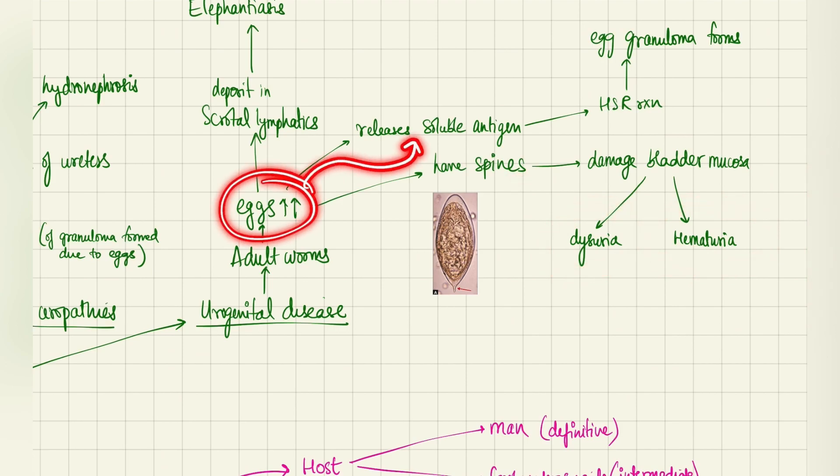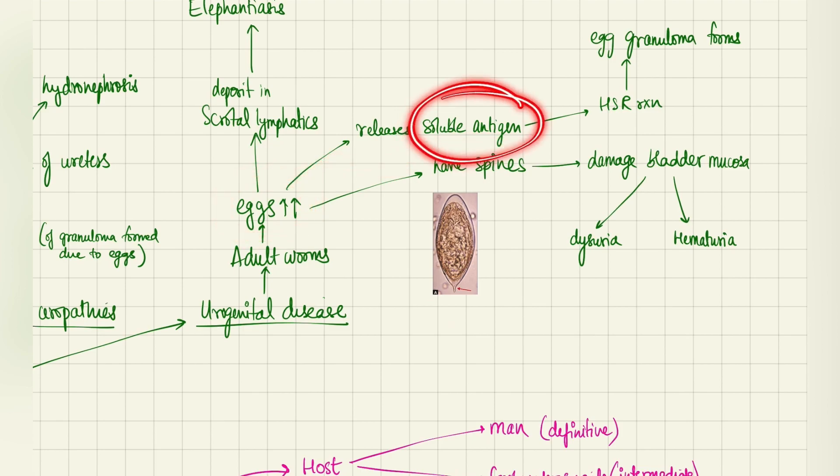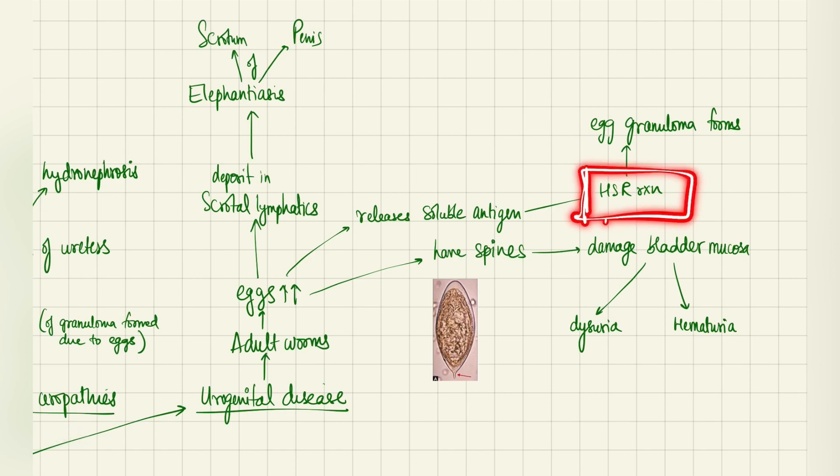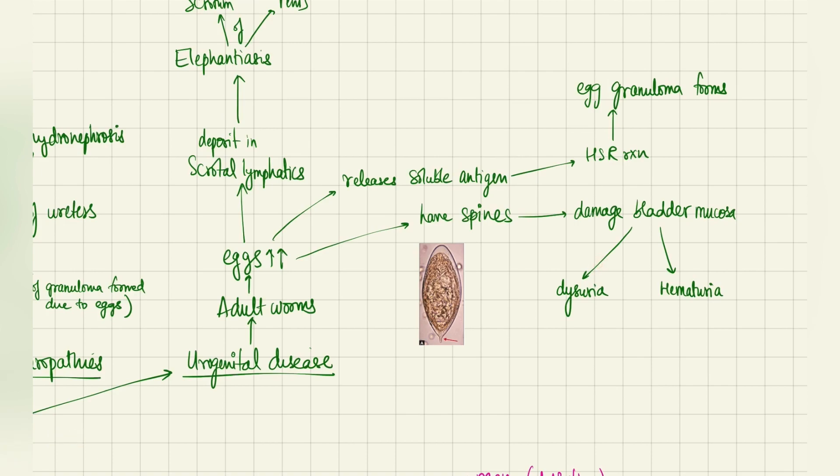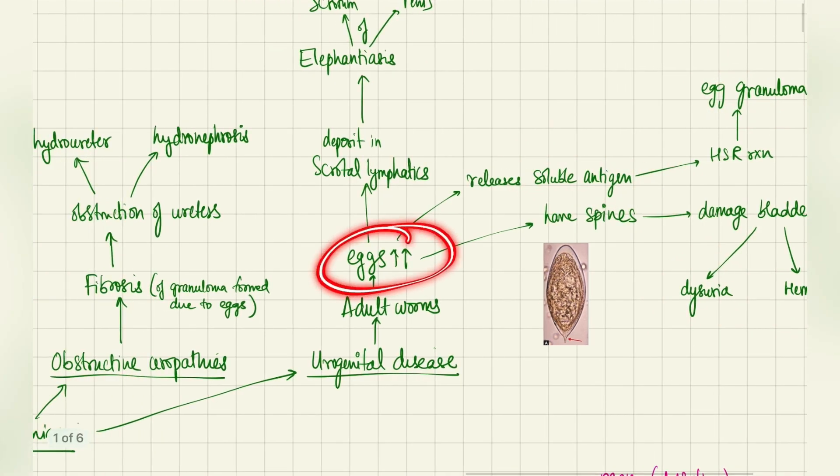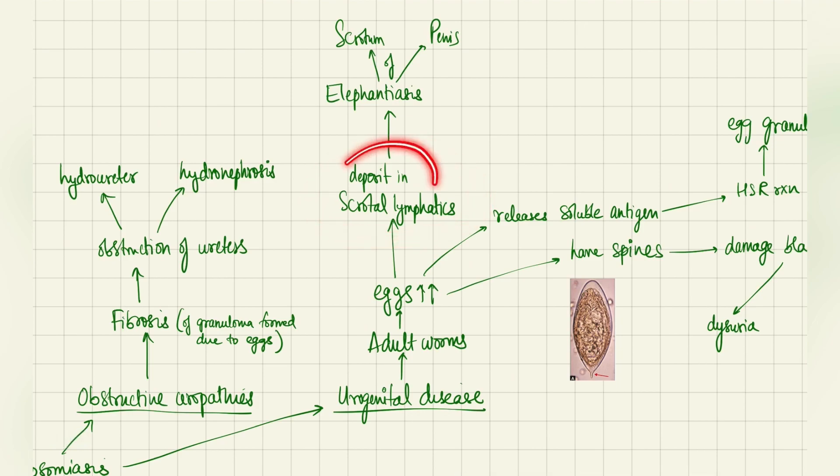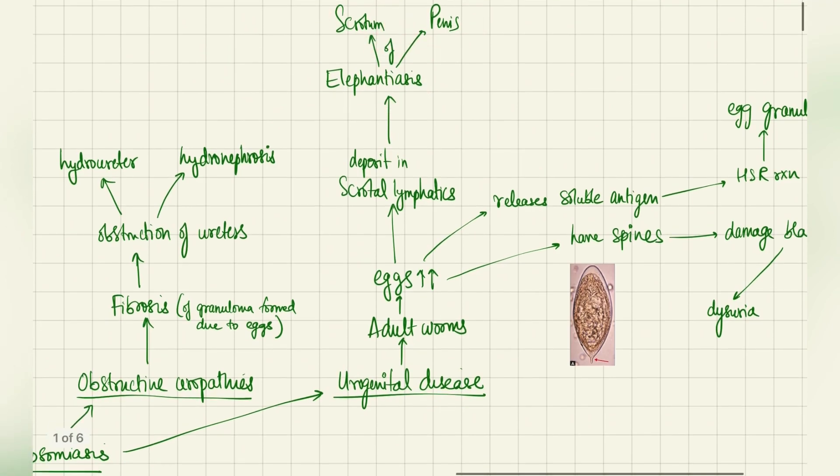Next, these eggs also tend to release certain soluble antigens. Since these are soluble antigens, they will trigger a hypersensitivity reaction in this case. The hypersensitivity reaction on a persistent scale will cause granuloma formation, the egg granuloma formation. So two manifestations till now: because of the spines, dysuria and hematuria, and because of the soluble antigen, we see granuloma formation. The third thing is these eggs might deposit in the scrotal lymphatics in males, and this can cause elephantiasis of scrotum or the penis. This is obvious because the eggs are so much in number that they may obstruct the scrotal lymphatics, and then obviously there will be an enlargement in the scrotum and the penis. So these are the urogenital diseases.